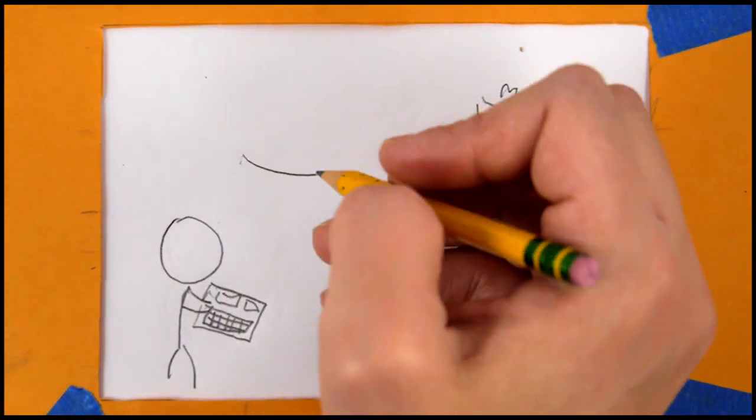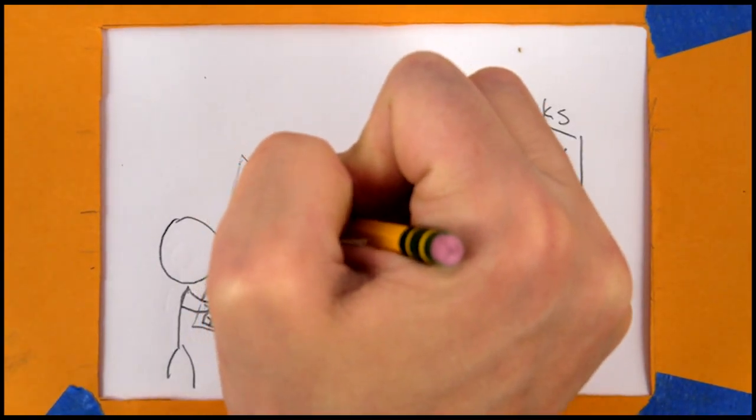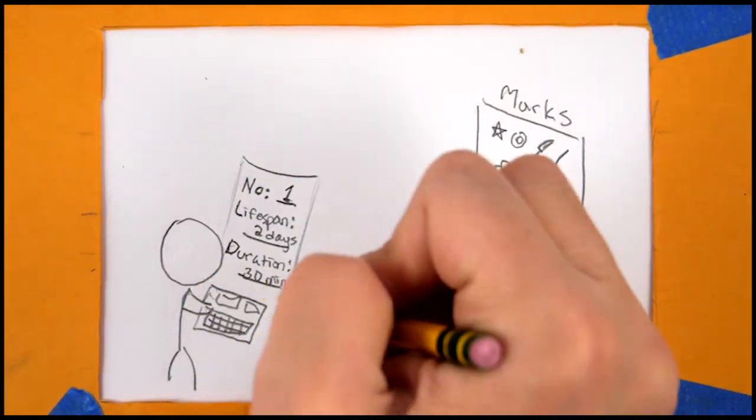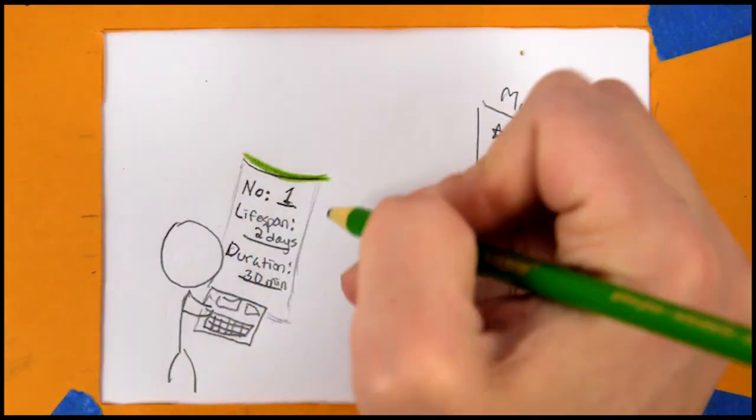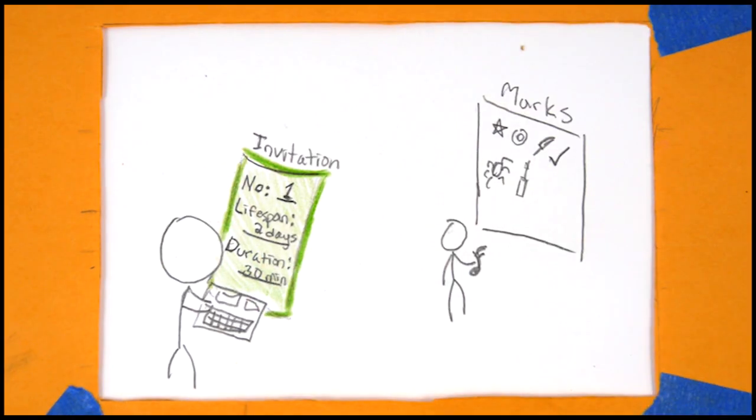At the time of making this invitation, the owner sets the number of marks allowed, the lifespan of those marks, and the duration of the invitation. The invitation may be revoked at any time, and once invited, a person may place the allowed number of marks as a free action.